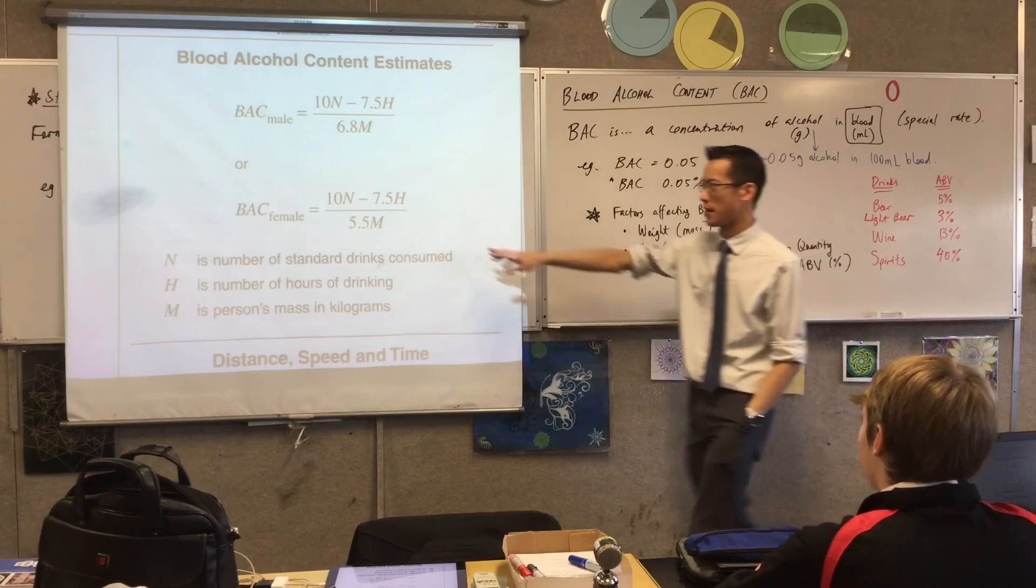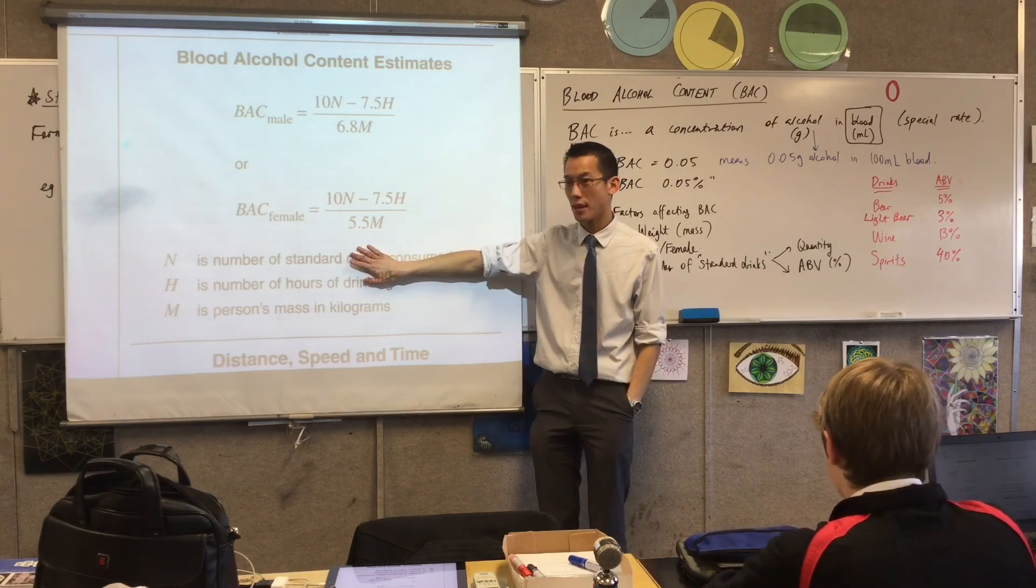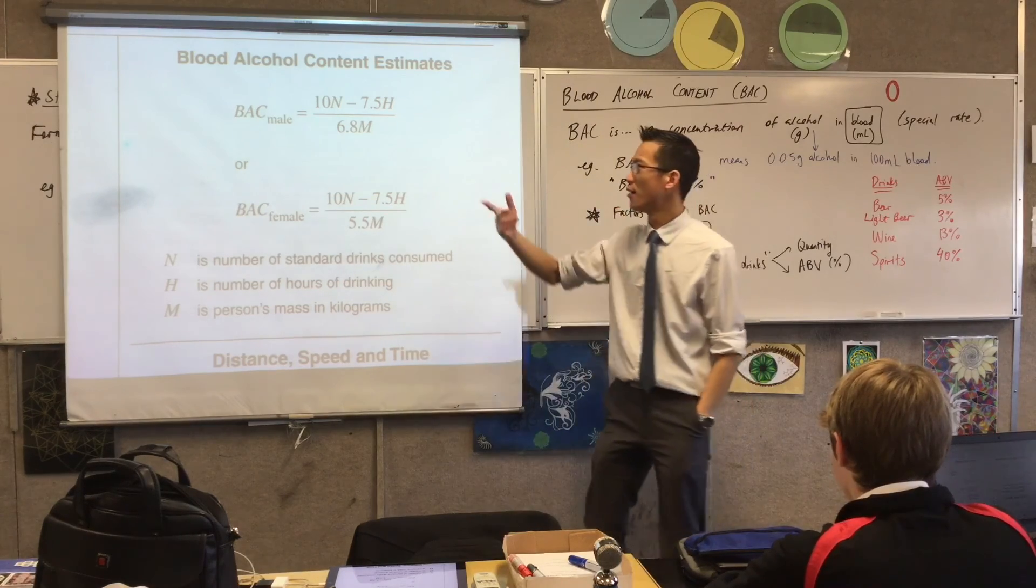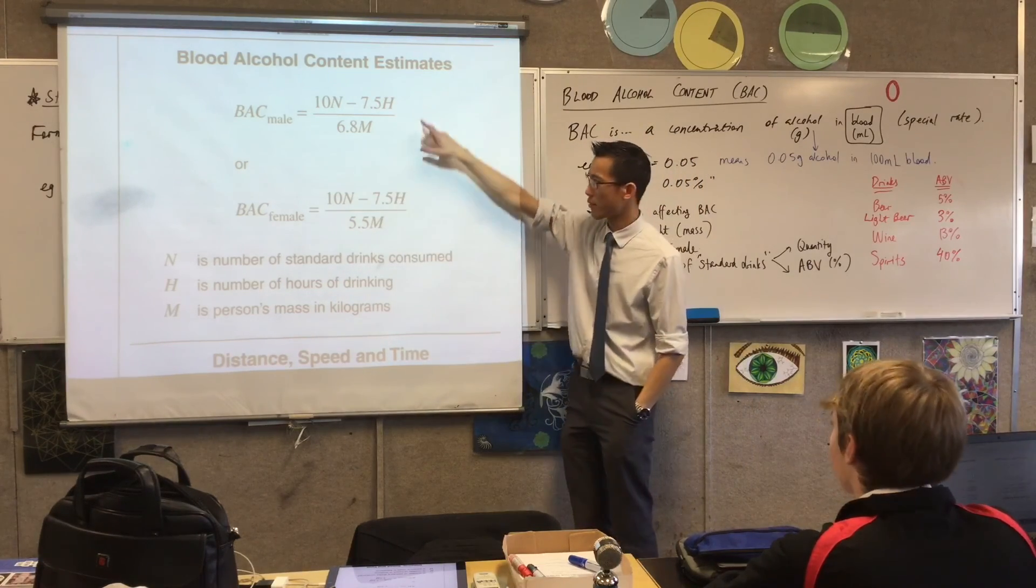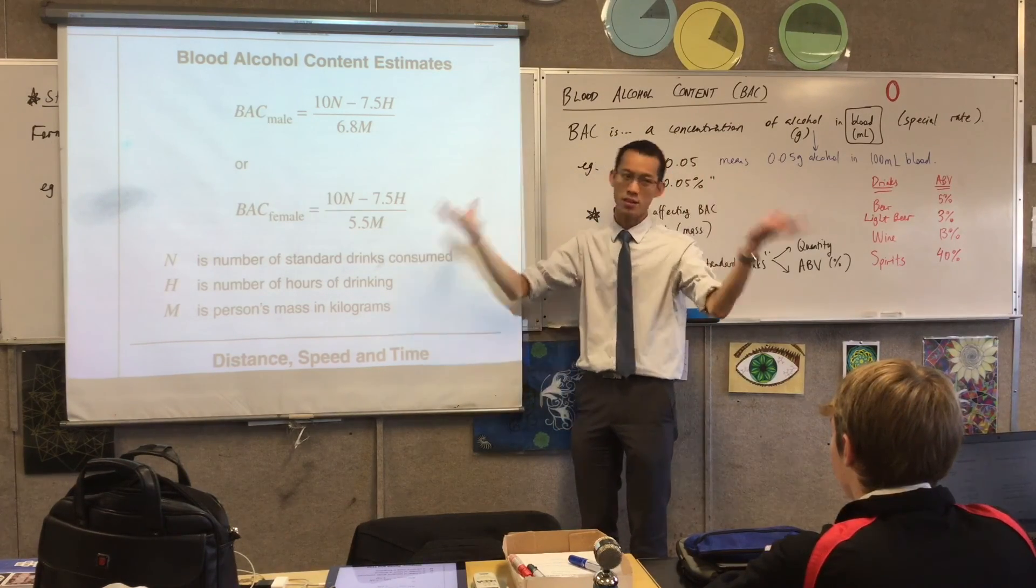What's the difference between them? The denominator. It's just that number on the denominator, right? Do you notice the female number is smaller? What does that do? It means your blood alcohol content will be higher for all the same numbers for a corresponding male, because can you see the denominator is smaller, so the whole number is bigger.